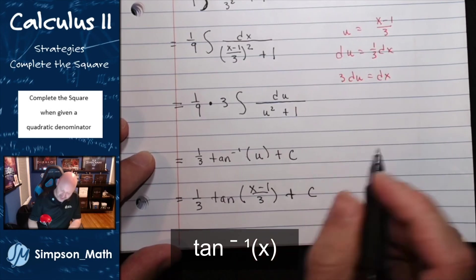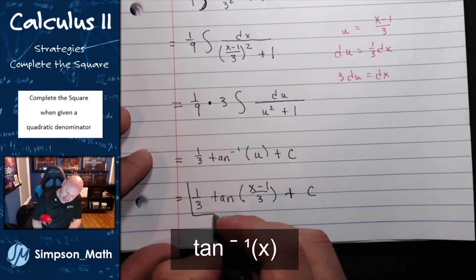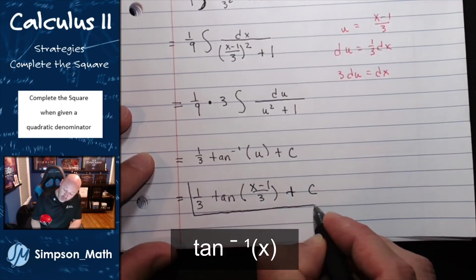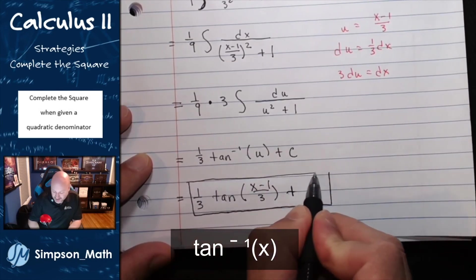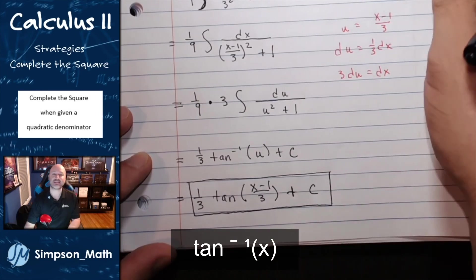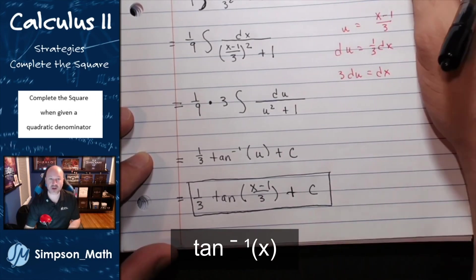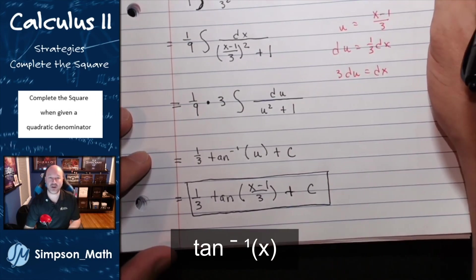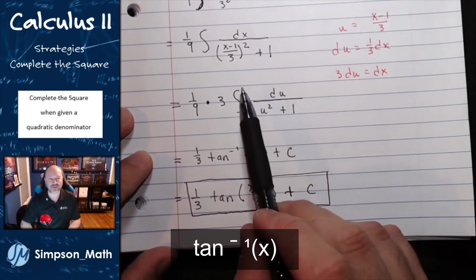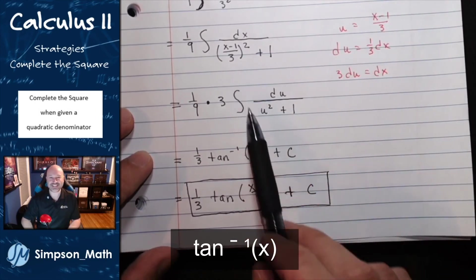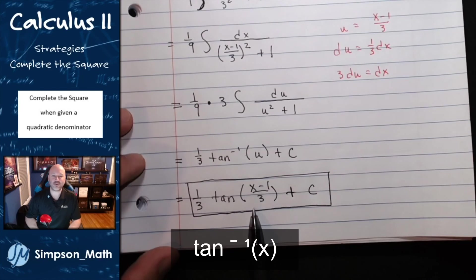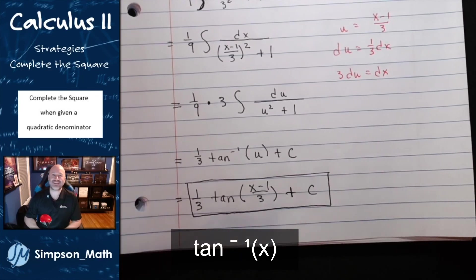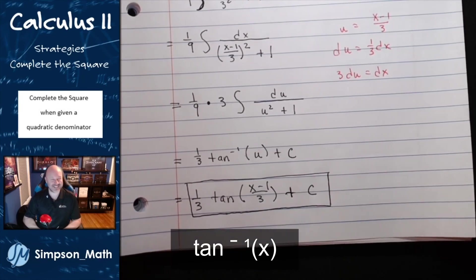So this strategy is if you see a quadratic denominator, one thought or one strategy is to complete the square of that quadratic denominator. Play around with some factoring. See if you can rewrite it in the form of inverse trig, something like arctangent. And then you can use old school u substitution. Alright, I'll see you in the next video.